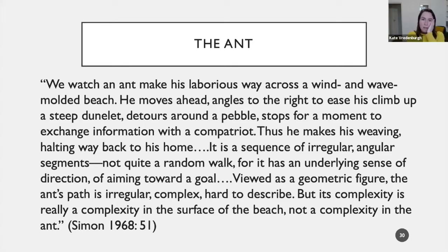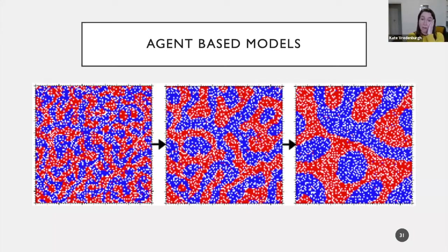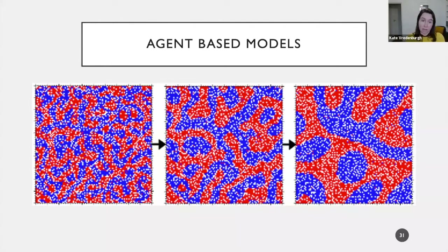The same kind of complexity in the environment alongside purported simplicity in the agent itself we also find in agent-based models. The interpretation of the simulation only requires that it makes sense to ascribe to the agents the behavior defined by the rules — namely, moving if you're not around enough like-group members. The complexity and interest of the model comes from the interactions of agents in the environment they find themselves in.